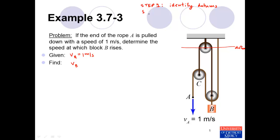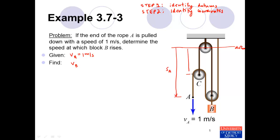Step two is to identify coordinates — that is, we want to assign variables to the different lengths of interest. One is the position of particle A, which I'll define to be SA. Another is the position of pulley C, which I'll define to be SC. And finally, the position of block B, which I'll define to be SB.